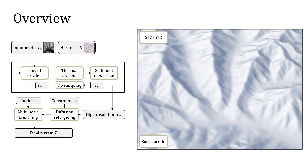We apply a sequence of erosion models at every resolution to generate landscape features at different scales. We separate fluvial erosion, thermal erosion, and sediment deposition into three distinctive processes. This separation provides more accurate control to the user over the different effects.